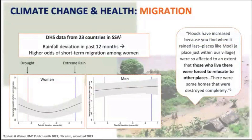Our work has shown that there may be gender differences in climate-related migration. In our recent analysis using DHS data from 23 countries in sub-Saharan Africa, we found that women had higher odds of migration in both conditions of drought and excessive rains, whereas we didn't find the same associations for men. This has important public health consequences because female migrants face unique health challenges such as exposure to gender-based violence and issues with reproductive health. From the qualitative study in Kenya, a participant noted: 'Floods have increased — places were so affected that those who lived there were forced to relocate. There were some homes that were destroyed completely.'